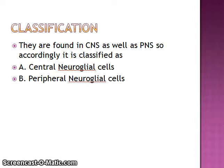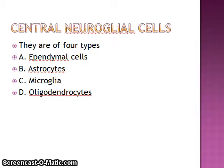Classification. They are found in the central nervous system as well as the peripheral nervous system. Accordingly, they are classified as central neuroglial cells and peripheral neuroglial cells. Central neuroglial cells are of four types: ependymal cells, astrocytes, microglia, and oligodendrocytes.